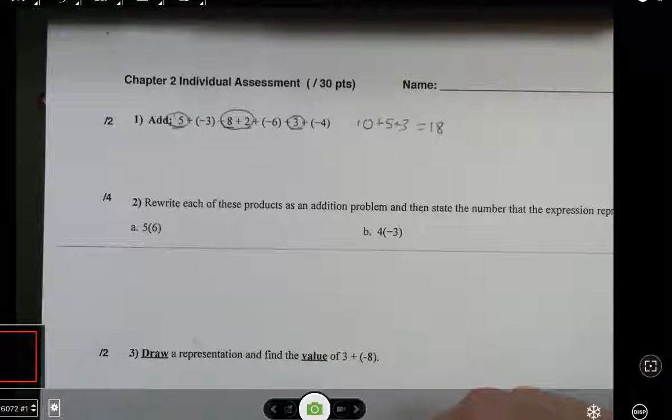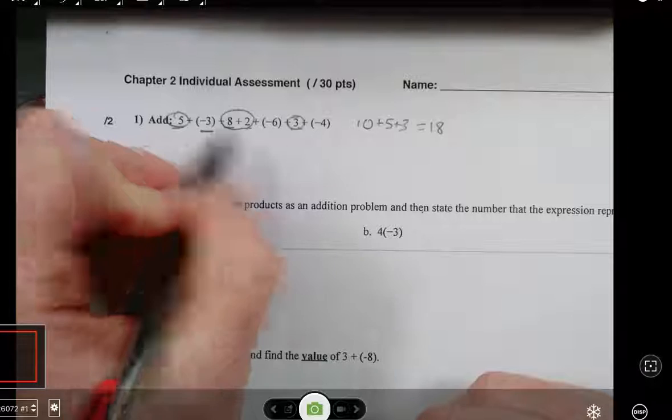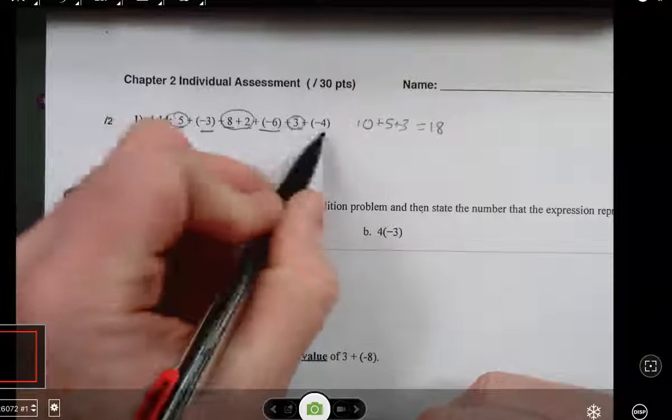Now let's look at the negatives. We have negative 3, negative 6, and negative 4.